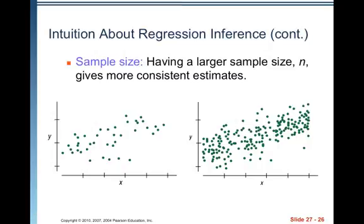Sample size. Having a larger sample size N gives more consistent estimates. It's always better to have a larger sample size versus a smaller one if you've got the resources to have the larger sample size. So the one on the right is going to have more consistent estimates than the one on the left simply because there's a larger sample size.